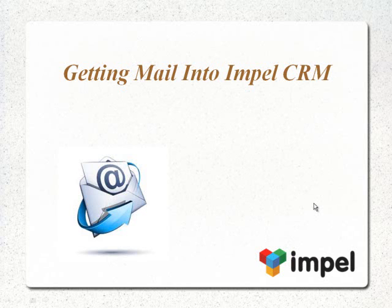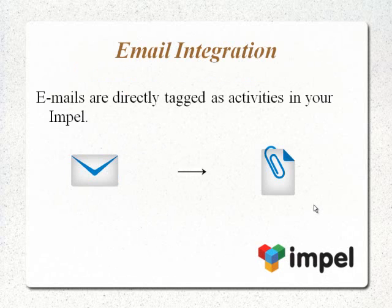Most customer interactions happen over email. So how do you quickly and simply keep your CRM up to date with your latest email activities? With Impel CRM, you can. With Impel's email integration, your emails are directly brought into Impel and are automatically tagged as activities. This makes it so much easier to track interactions you've had with your customers.